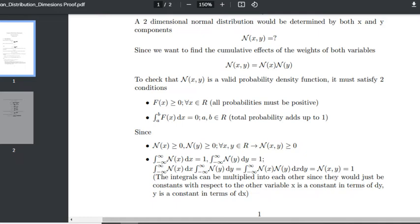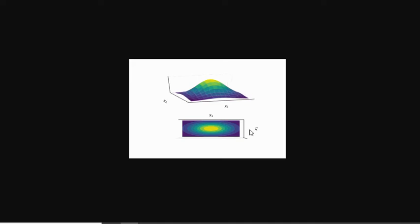What you'll end up with is something like this. You can see the normal distribution curve on the x-axis and on the y-axis. You're just multiplying the weights, because they're completely independent of each other.